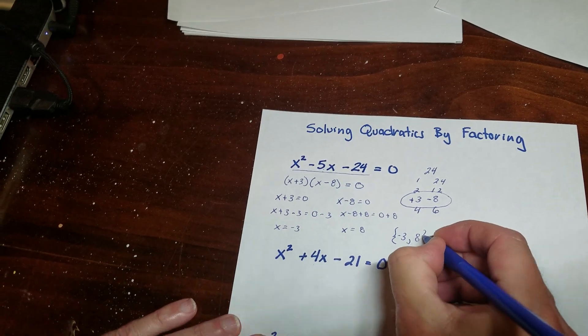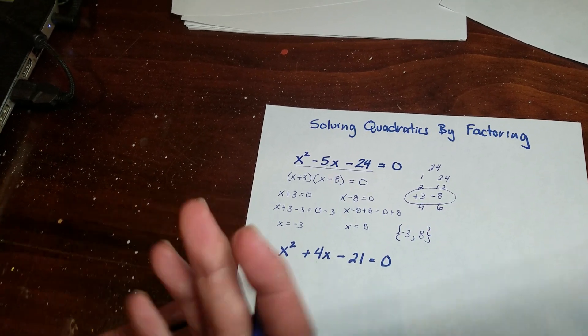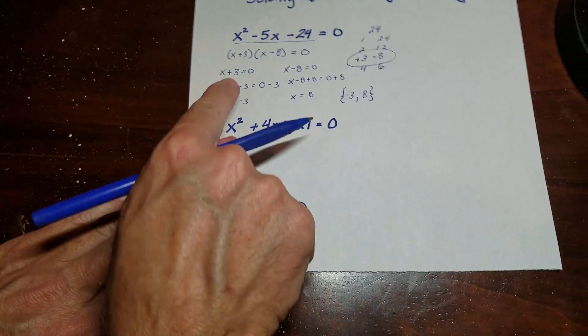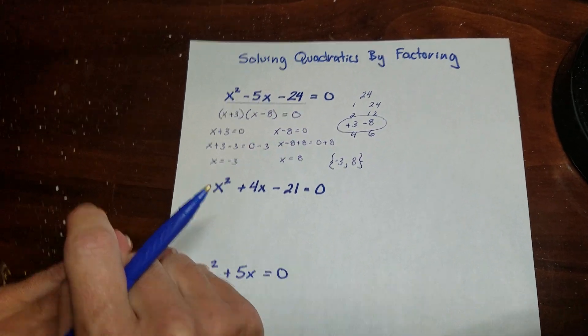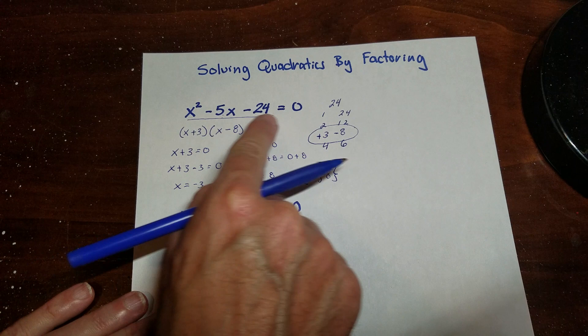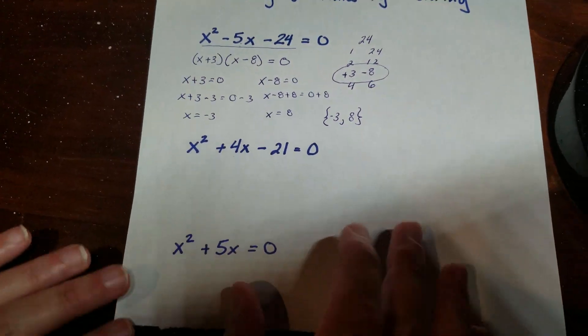x can be two different things. And when we graph, you'll understand more why there's two answers. But what I explained right here about this times this is equal to 0, that's why when you solve quadratics by factoring, usually you have to make the equation equal to 0. So let's try another one.